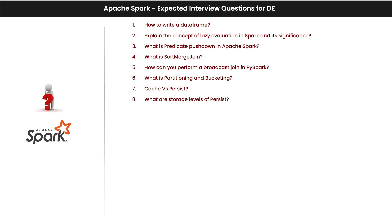What are storage levels of persist — we discussed those. Storage levels include: memory only, memory and disk, memory and disk with serialization, only disk. Storage levels are used only with the persist method, not cache. Repartition and coalesce — we discussed those as well.